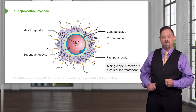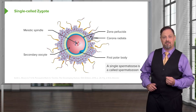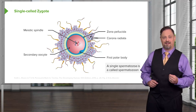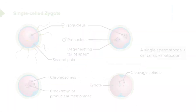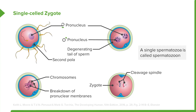We pick up right at the moment after fertilization has occurred. A spermatozoa has just entered the oocyte, puncturing through the protective barrier of cells and the zona pellucida to reach the oocyte and its cytoplasm. As soon as a single spermatozoa has entered the cytoplasm of the egg, it sets off a chain reaction of events that prevent additional spermatozoa from making it in. After the sperm penetrates the oocyte, the oocyte completes meiosis II.